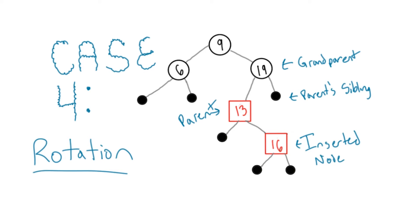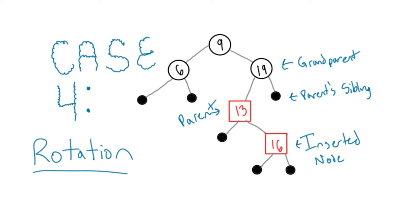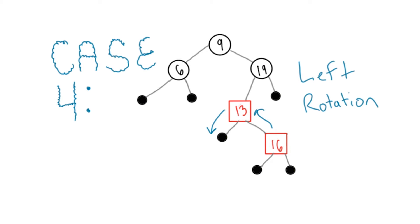In case 4, our red node and its red parent are not on the same side of their parents. Our node is a right child, and its parent is a left child. Here we will perform a left rotation, since the nodes shift one place to the left while maintaining their order.